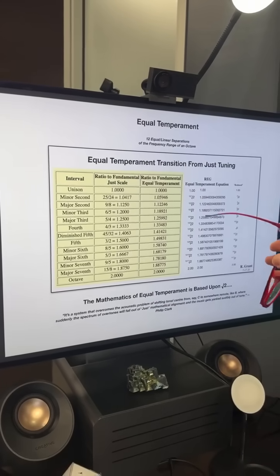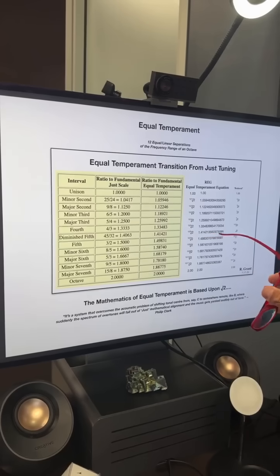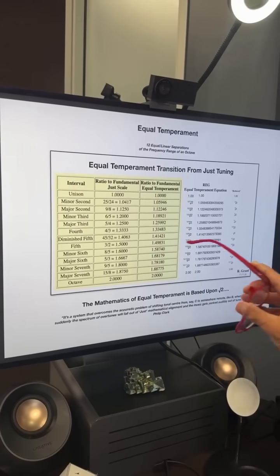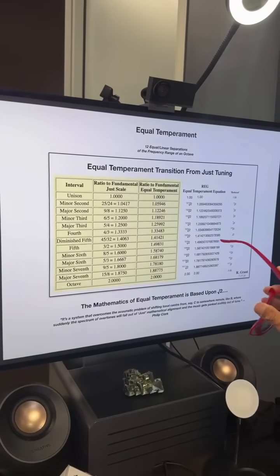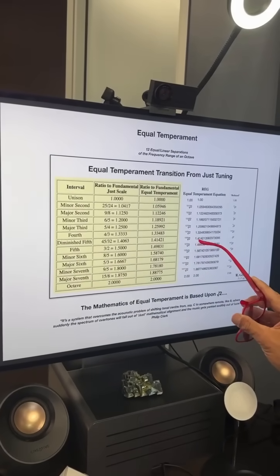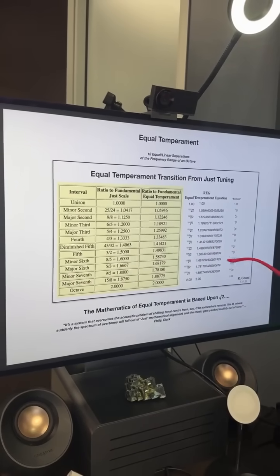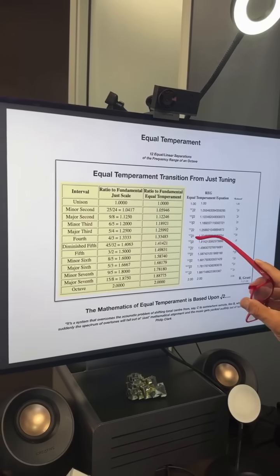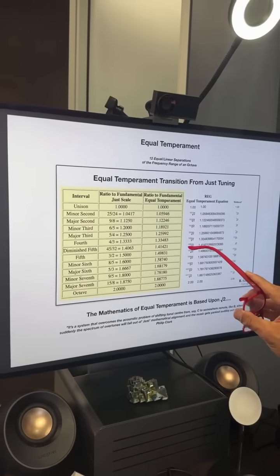So, for example, we start with the middle of the octave, which is the diminished fifth, right here, the diminished fifth, and that comes out to the square root of 2, 1.414213562.